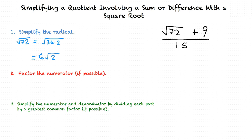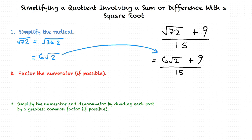Yes, that is right. This means that we now have 6 times the square root of 2, plus 9, all divided by 15.